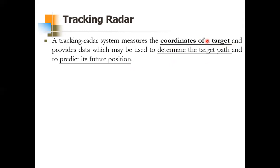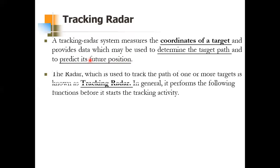Tracking radar is something which measures the coordinates of the target — that is, the location of the target. The location comprises two angles: one is azimuth angle and one is elevation angle. It also has to provide data which may be used to determine the target path, that is the trajectory, and predict its future position. The definition: tracking radar is a radar used to track the path of one or more targets.